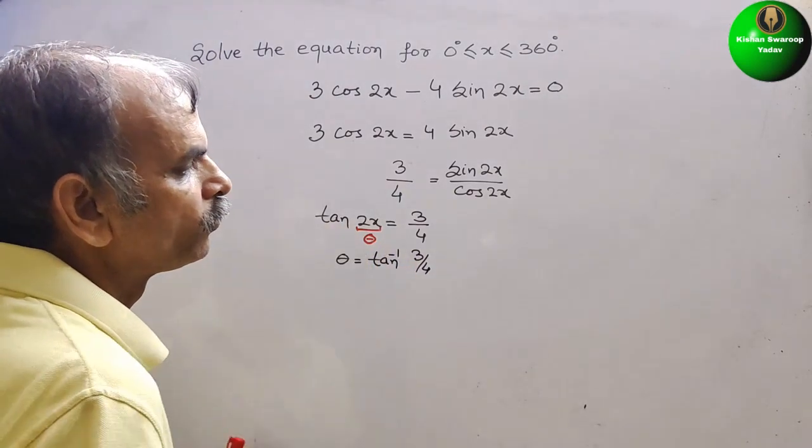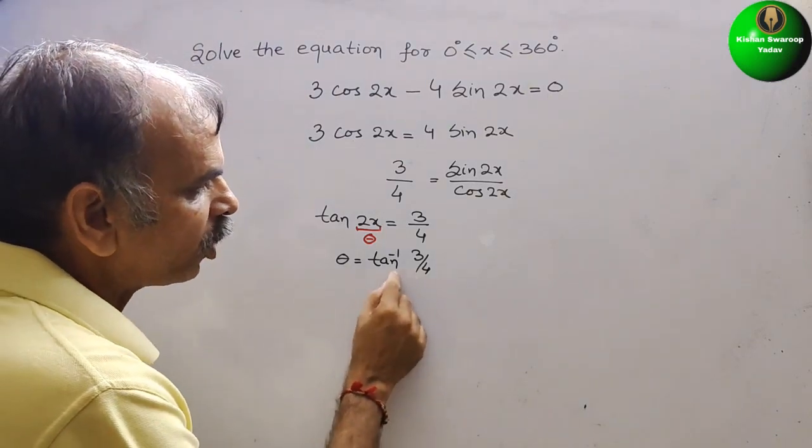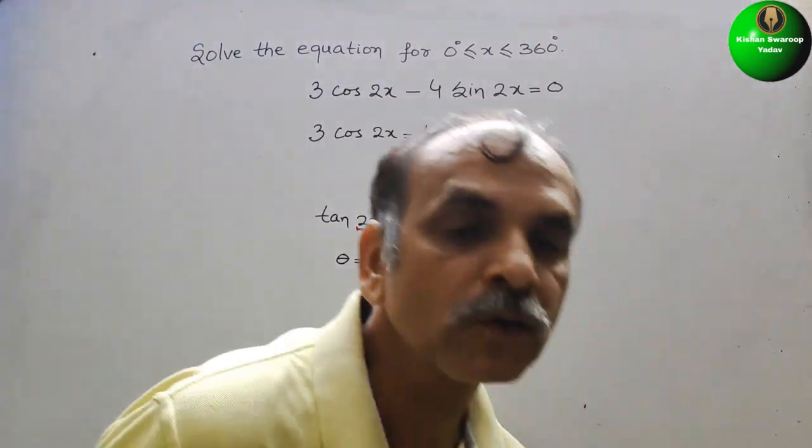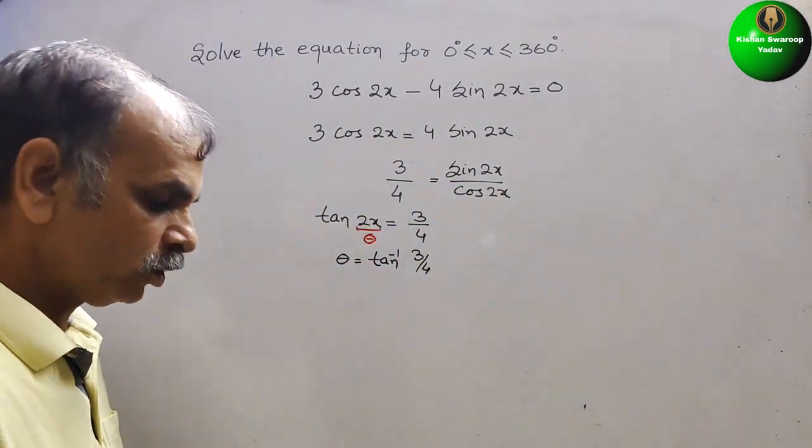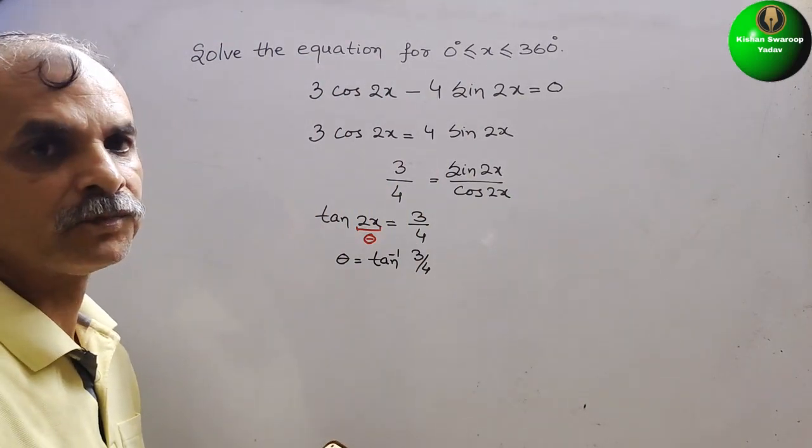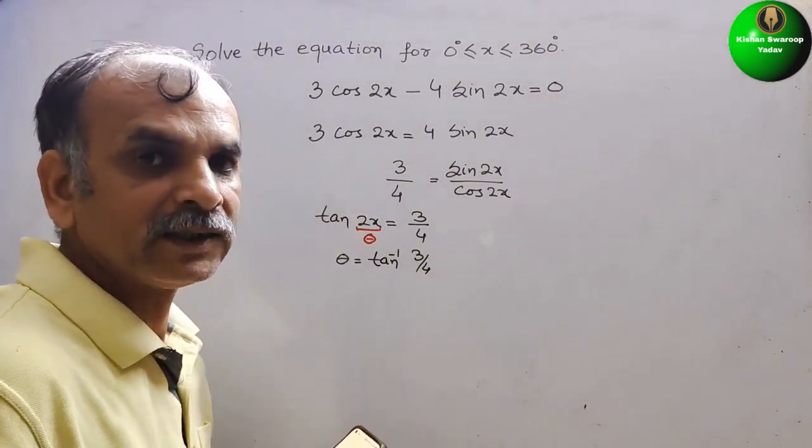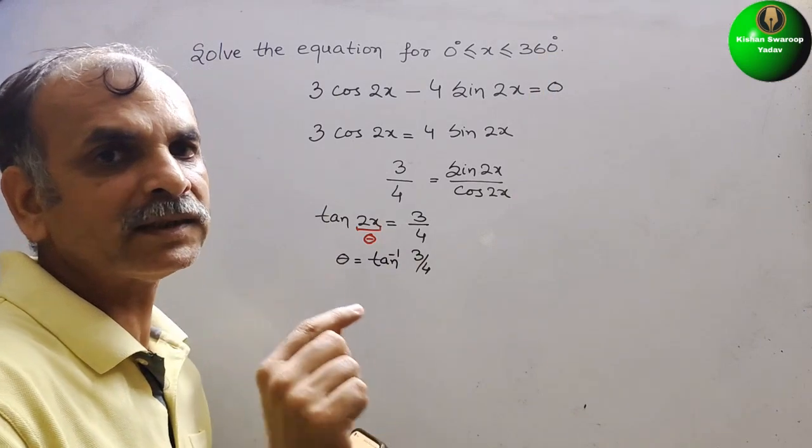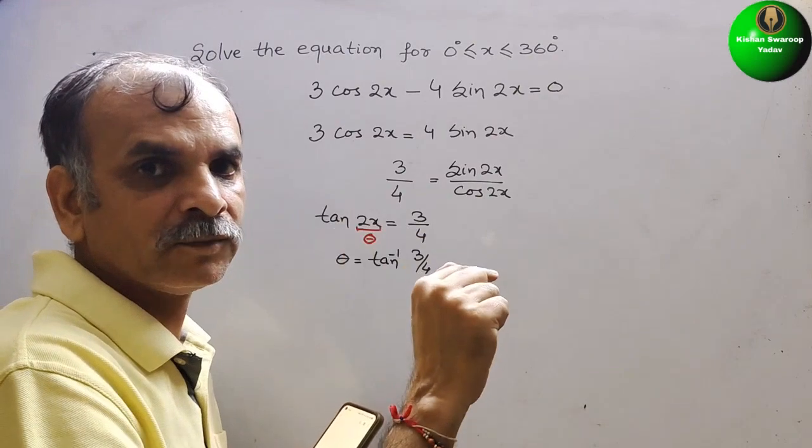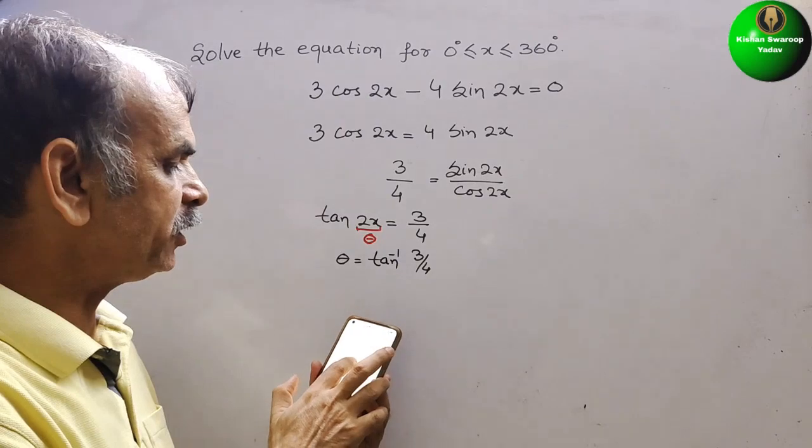So first we will solve this with the help of a scientific calculator. Just open the scientific calculator and press degree, here they have given in degree. Second, you have to press inverse, because it's tan inverse. Next, you have to press tan inverse.